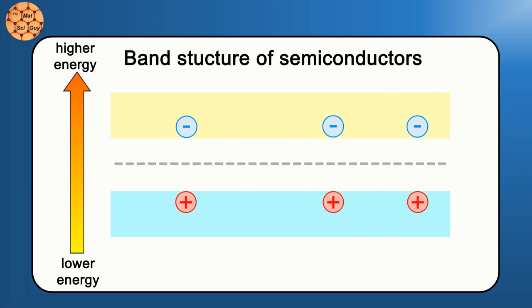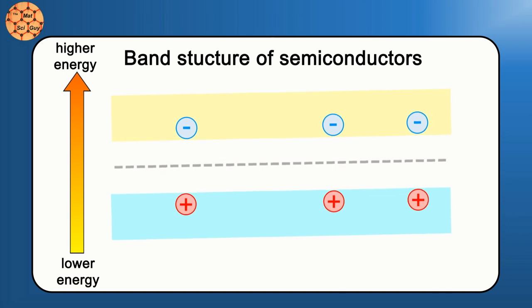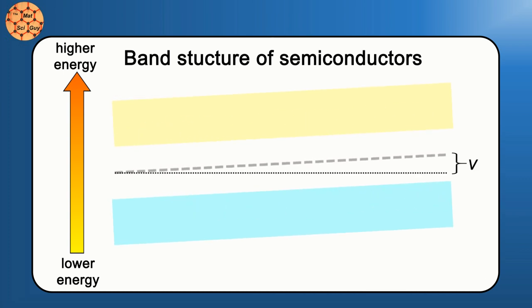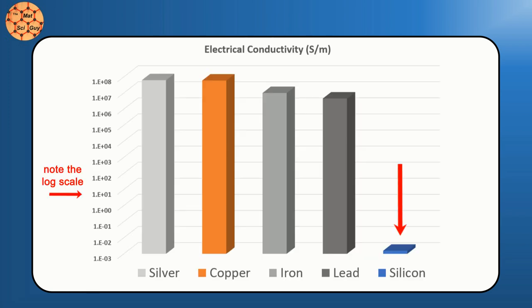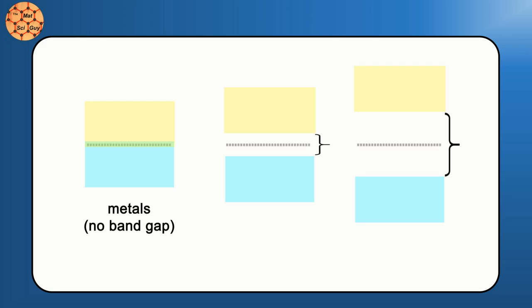These electrons and holes are free to move, and they make conduction possible in semiconductors, but they're still less conductive than metals, much less conductive. It also means that the larger the band gap is, the more insulating the material tends to be.